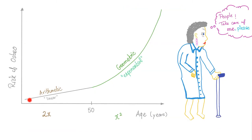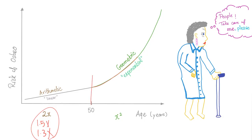If we draw a graph with risk of osteoarthritis on the y-axis and age in years on the x-axis: before 50 years of age, your risk of osteoarthritis is linear — an arithmetic relation. But after the age of 50, it turns into a geometrical or exponential relation — an exponential increase in your risk of getting osteoarthritis. Instead of 2x, we have x squared. That's why osteoarthritis — the primary one — is a disease of the elderly.